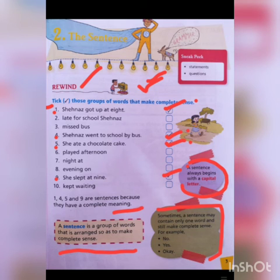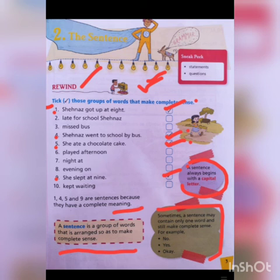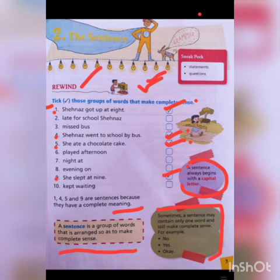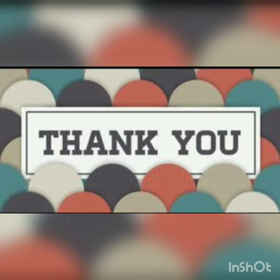So, you have understood what a sentence is: a group of words that makes a complete sense is called a sentence. Sentences always start with a capital letter — never a small letter. And sometimes a sentence can be just one word — like yes, no, okay — and still have a complete meaning. I hope you understood it. The exercise we will do in the next video of this chapter. Have a nice day and thank you.